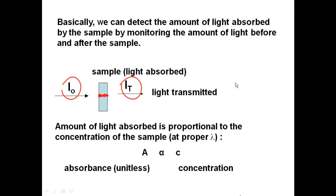The amount of light absorbed is proportional to the concentration of the sample at the proper wavelength — for a particular wavelength for a particular sample. Absorbance is proportional to concentration. Absorbance has no units; it is unitless. The more substance that is there, the more light that can be absorbed — the more probability of the light hitting the species during absorption.